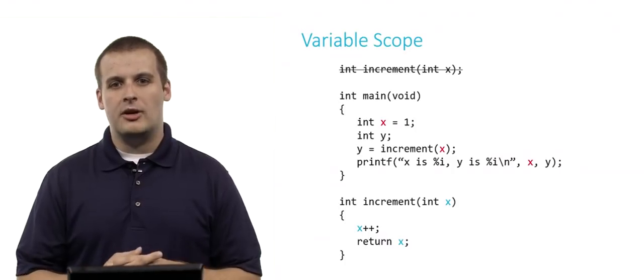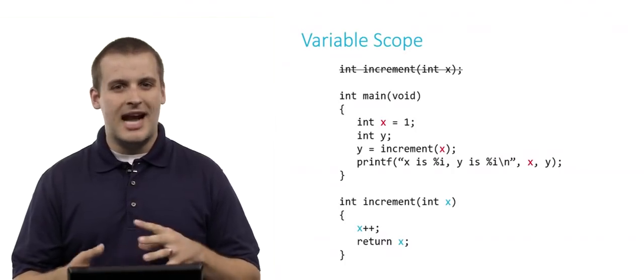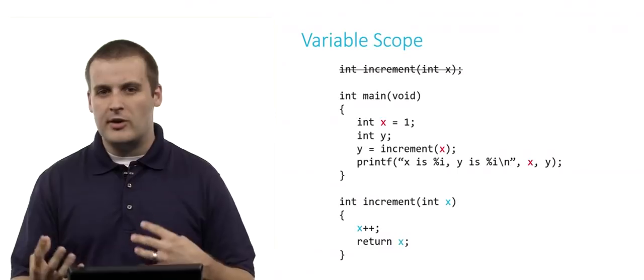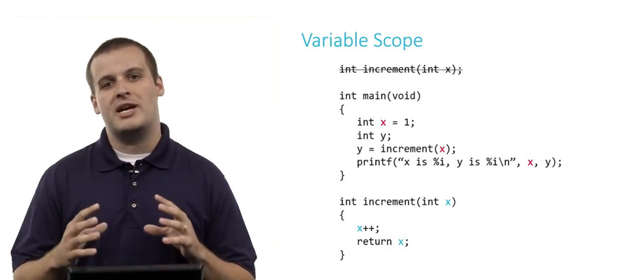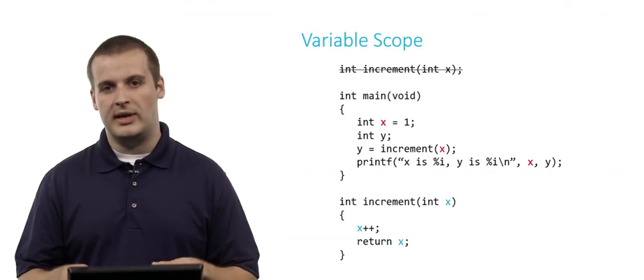All right, hopefully you've taken a few seconds to try and parse this one out. Let's do it together. So I've crossed out increment declaration at the top there. It was kind of a distraction. It's not its own variable. It doesn't have its own scope. It's just a function declaration. So for purposes of trying to parse out what's happening in this program, we might as well just avoid it.